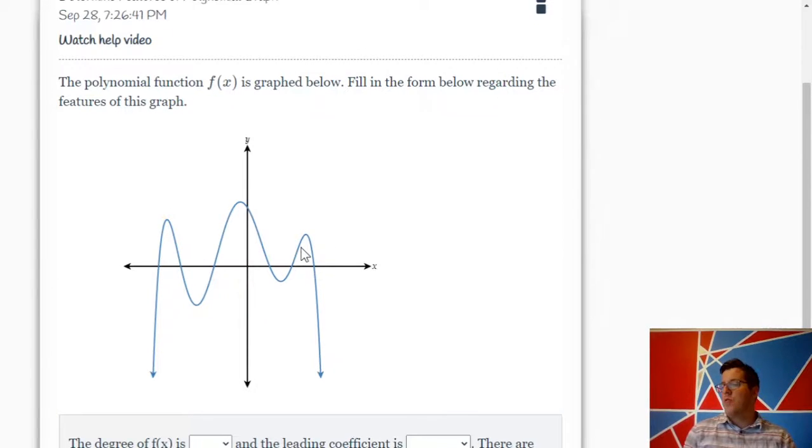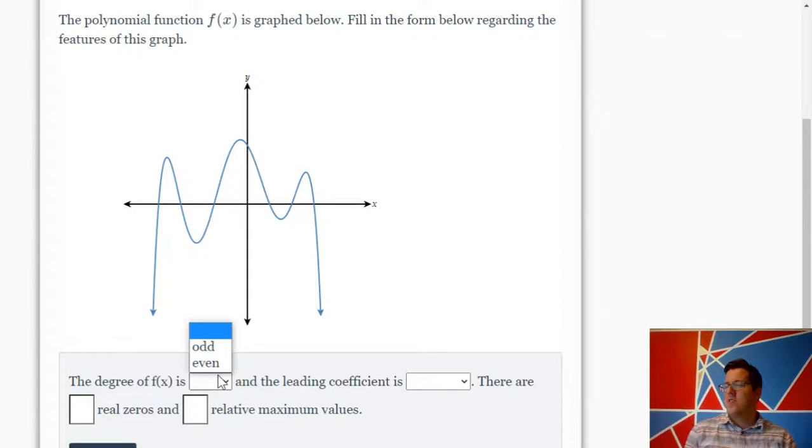It would have a negative leading coefficient. Well here. The degree is even, because the ends are pointing in the same direction. And the leading coefficient is negative, because the right end is going downwards.